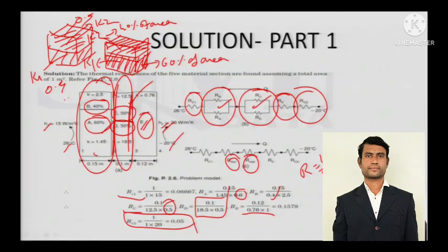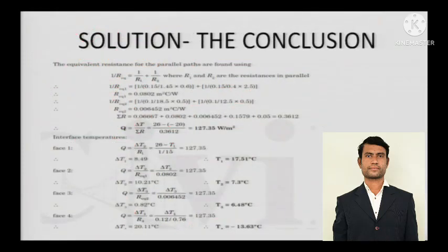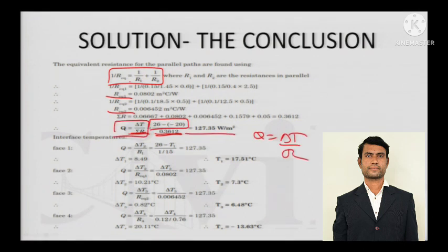Once you calculate all the individual resistances and combine the parallel ones to get R_equivalent1 and R_equivalent2, you add all resistances in series to get the total equivalent resistance. Then using q = ΔT / R_total, you get the total amount of heat transferred.